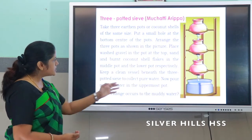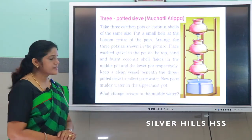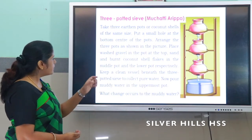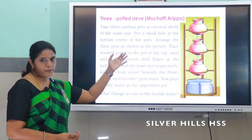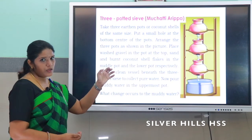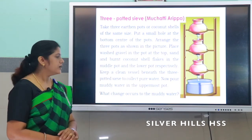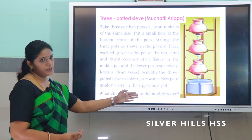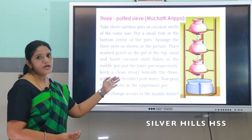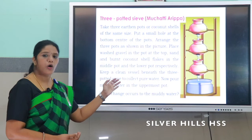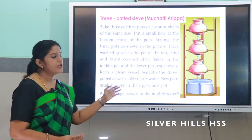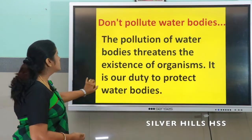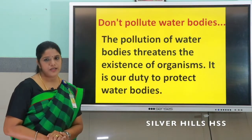Keep a vessel beneath the three-potted sieve to collect pure water. Now pour muddy water into the uppermost pot. What can you observe, children? Yes — the muddy water changes to pure water! So this is a method of purification of water. Once again, the three-potted sieve is called 'muchetti aripa.' Do not pollute water bodies.